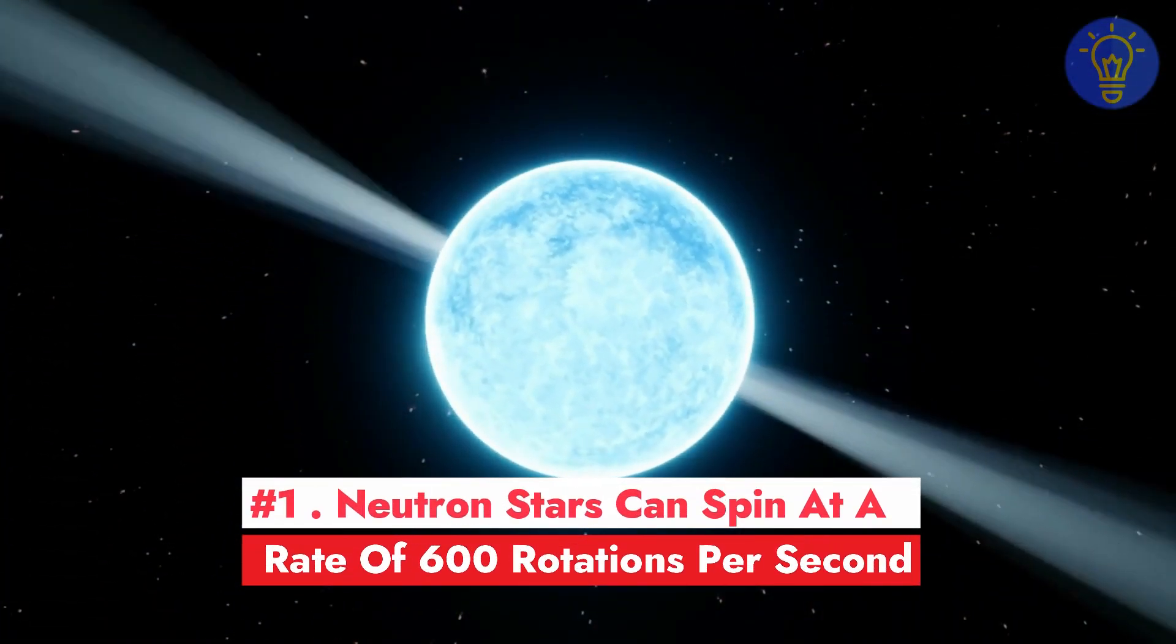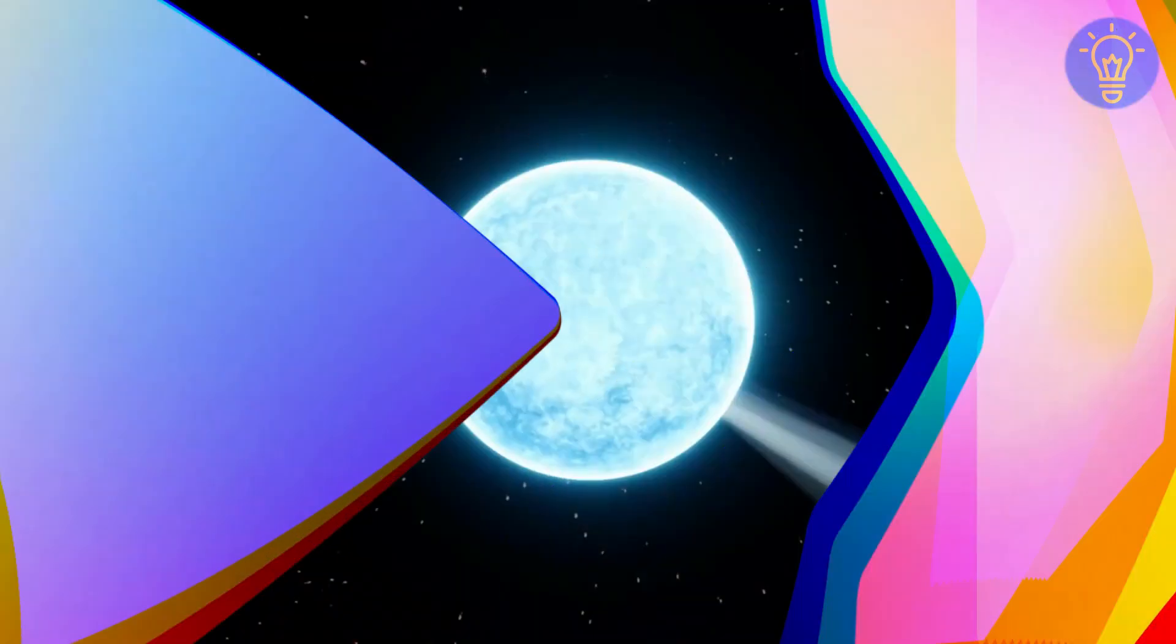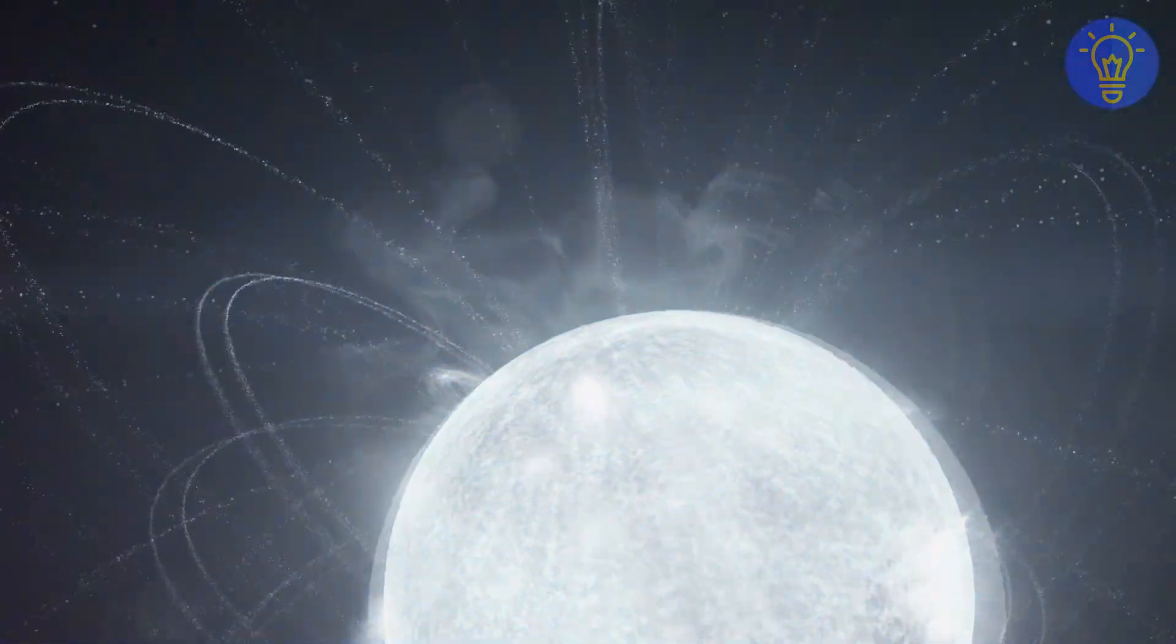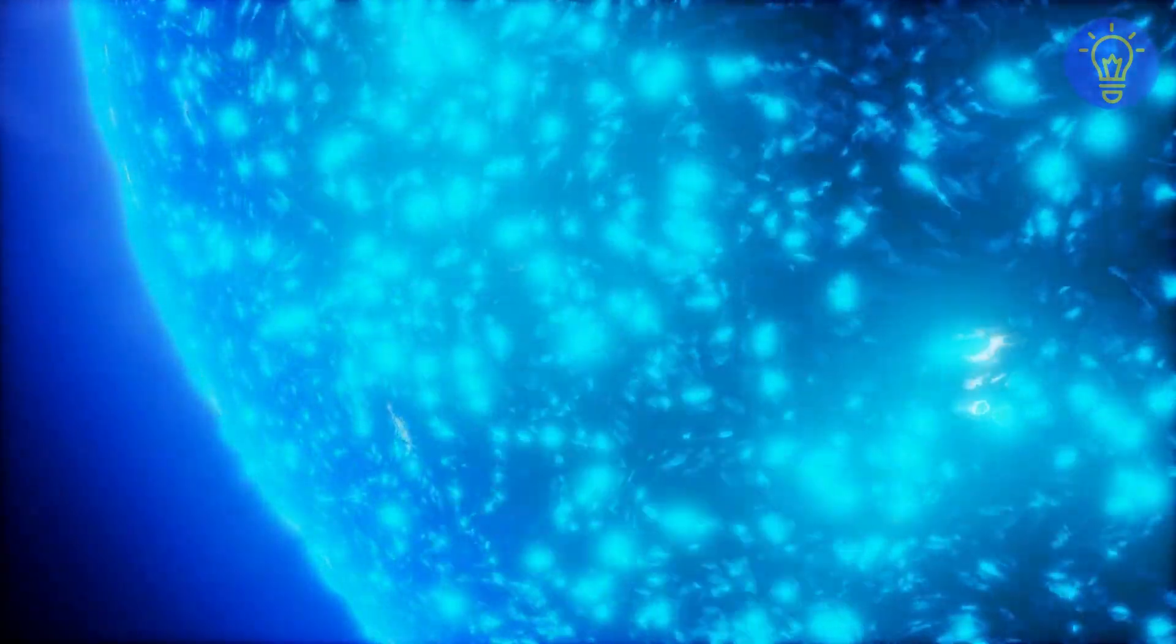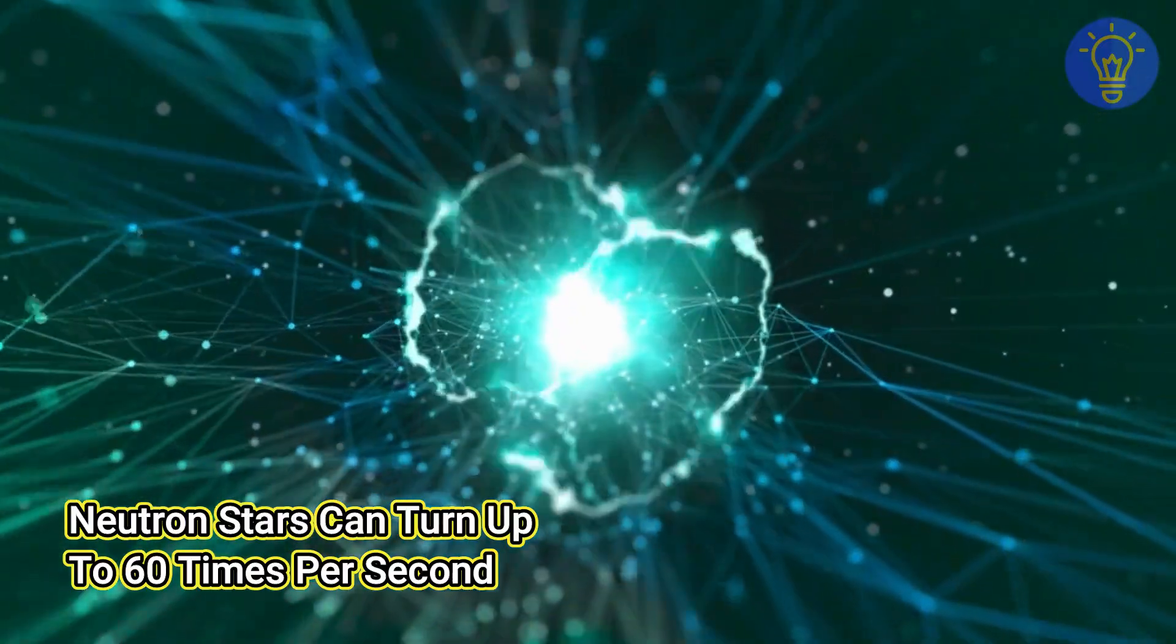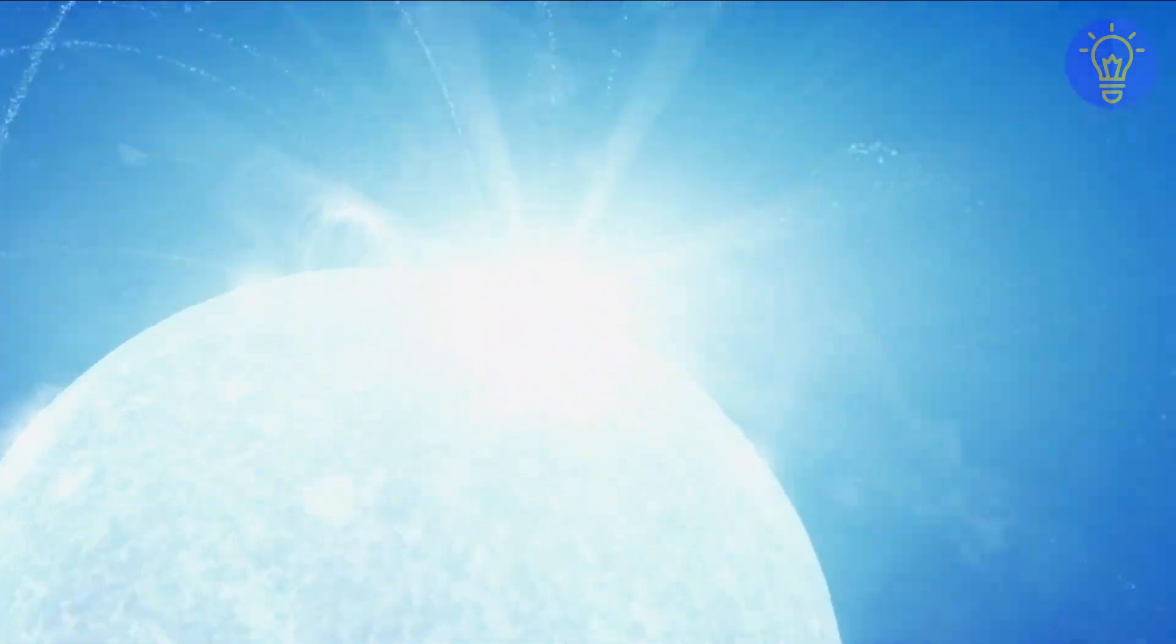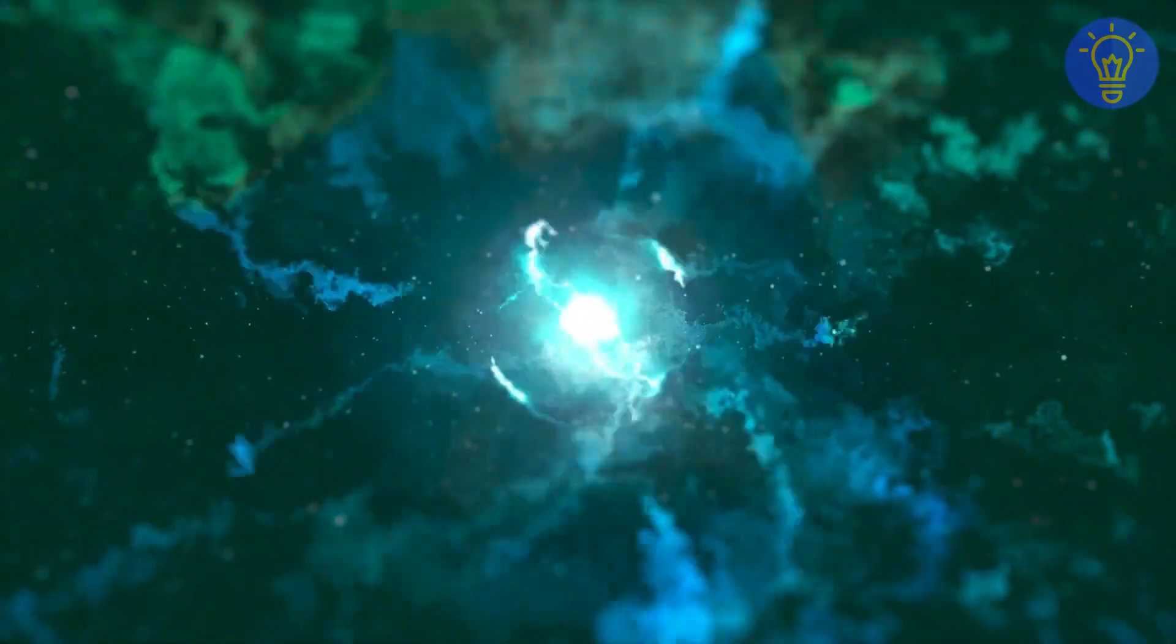Number 1. Neutron stars can spin at a rate of 600 rotations per second. Neutron stars are one of the possible evolutionary endpoints of high-mass stars. They're born in a core-collapse supernova star explosion and rotate rapidly due to their physics. Neutron stars can turn up to 60 times per second after being born. Under exceptional circumstances, this rate can increase to more than 600 times per second.